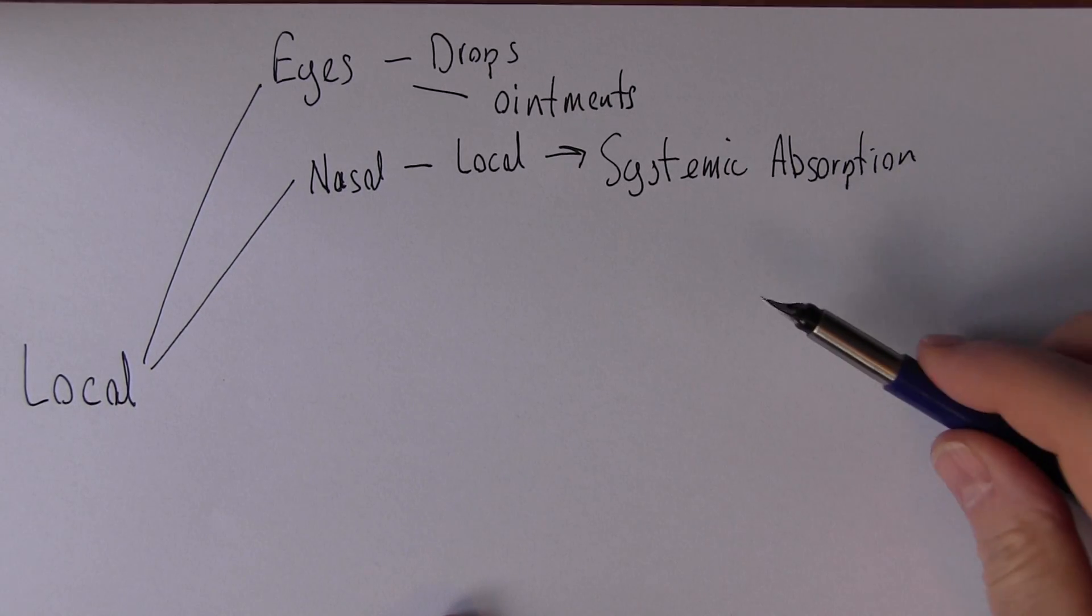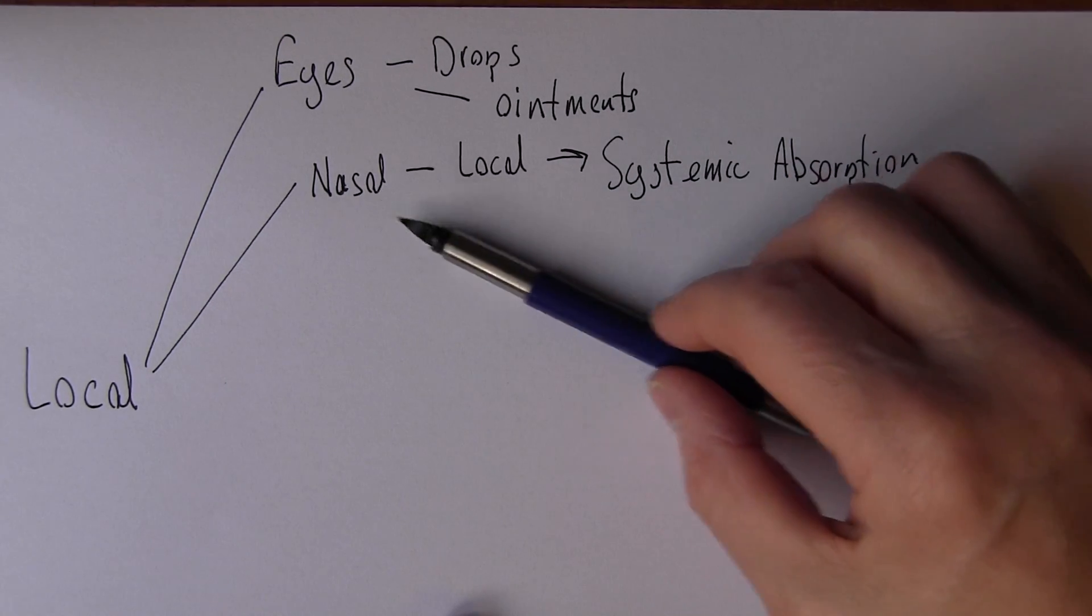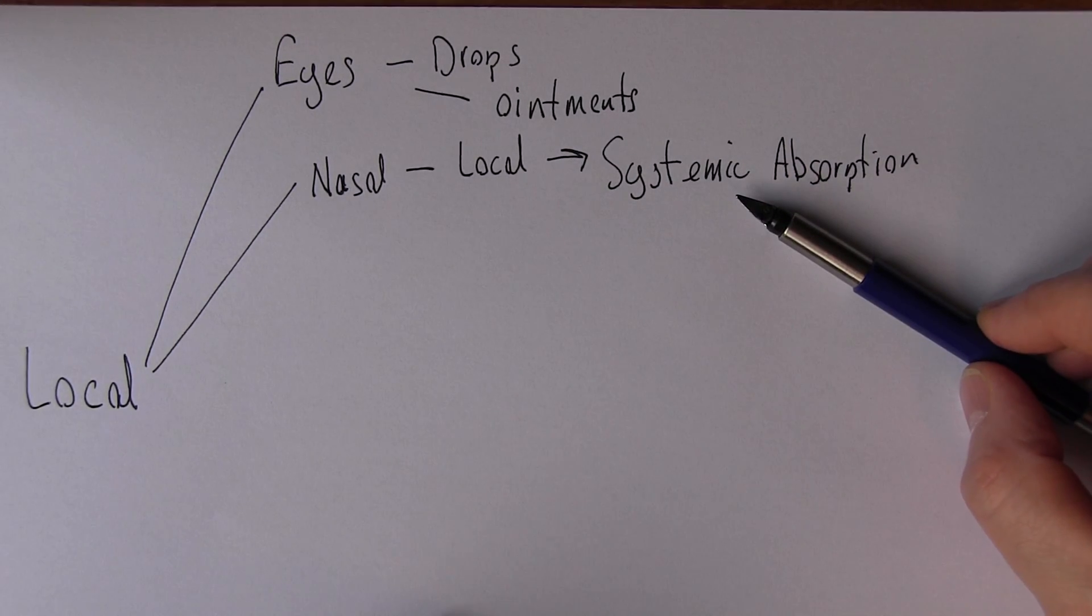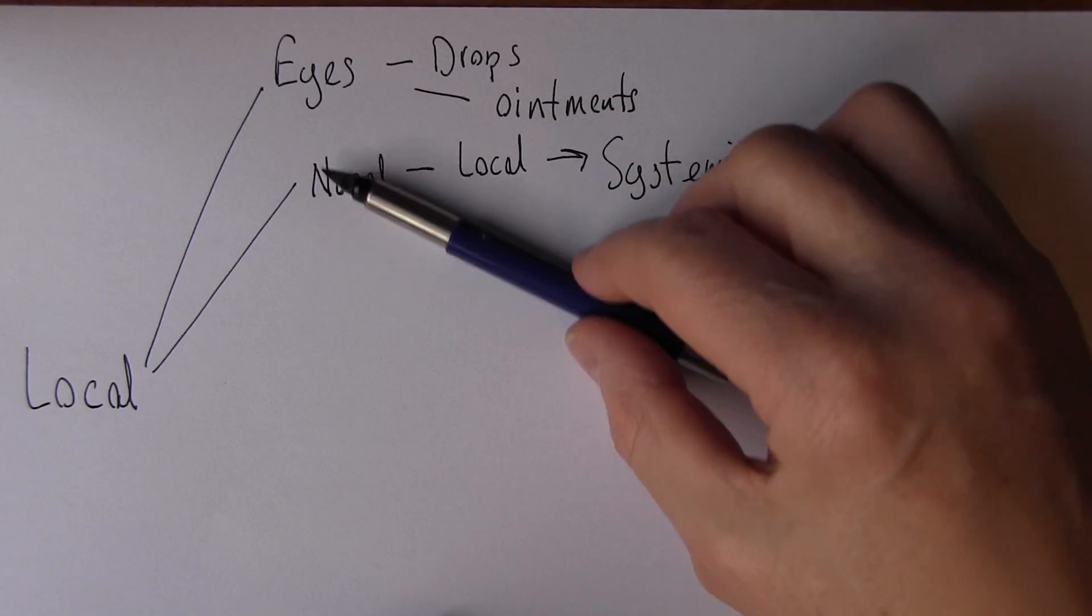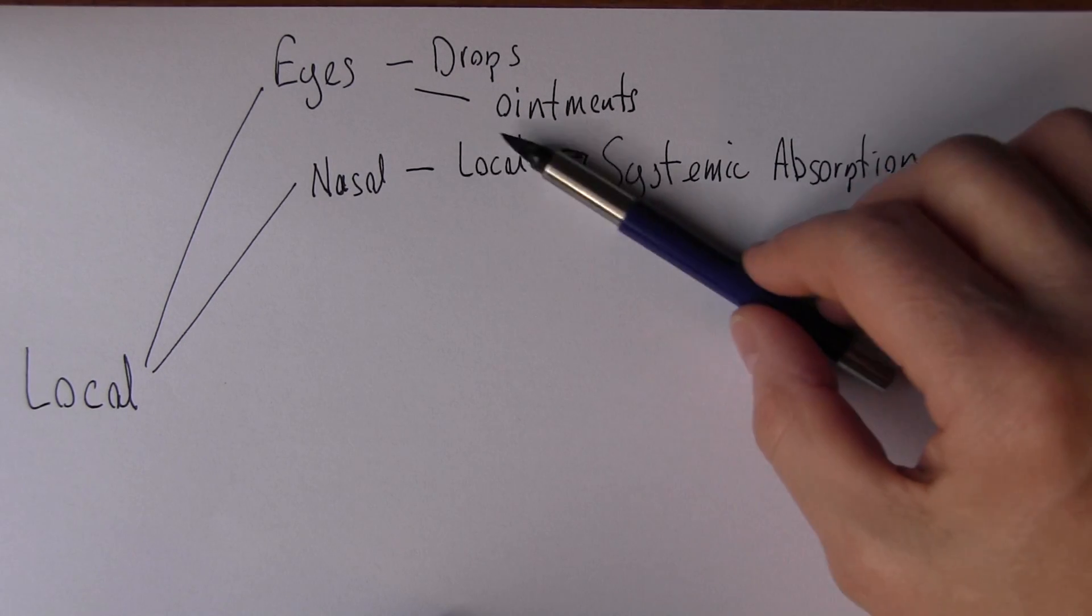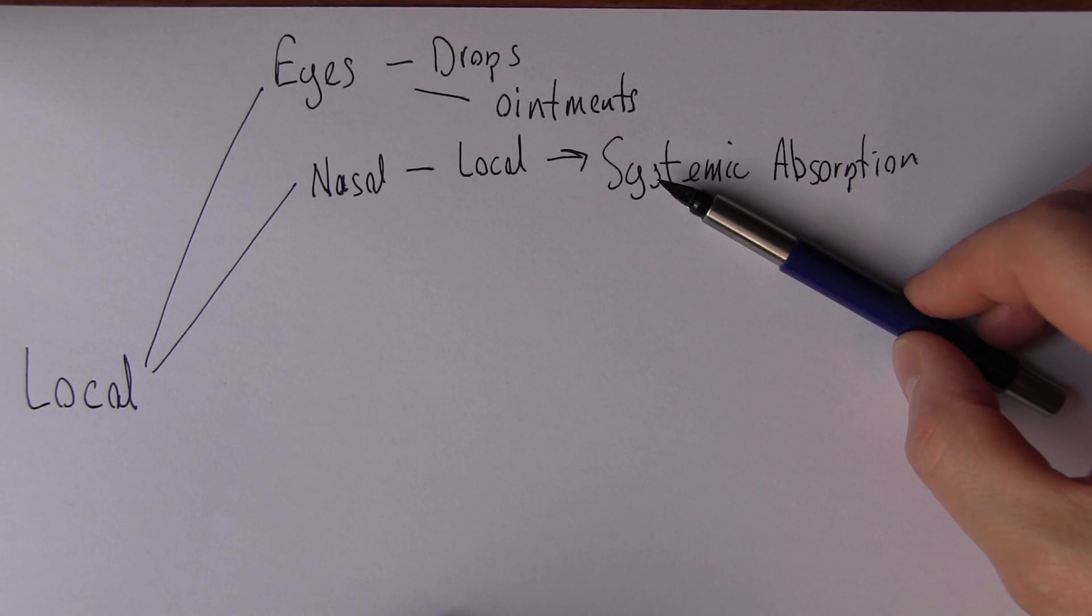This could almost be a side effect. Sometimes drugs might be given nasally with the express purpose of systemic absorption—you might think of people abusing cocaine, for example, where the whole point is to get the drug to the brain. But bear in mind there's local effects, but many drugs can be systemically absorbed as well. We'll see this repeatedly when thinking about giving drugs for local application.